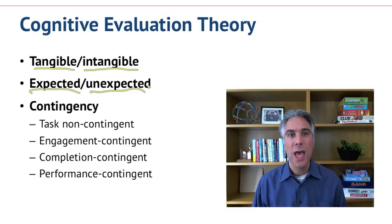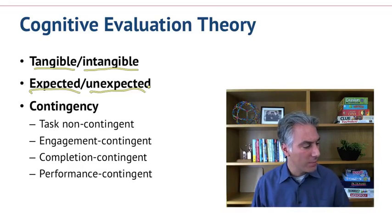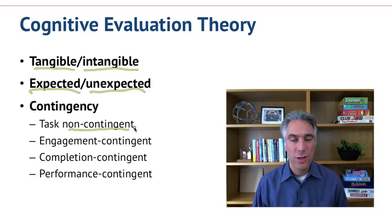Third set of distinctions has to do with what the rewards are contingent on. What is it that the player or other participant has to do to get the reward? The first subcategory is if the reward is non-contingent. You get the reward no matter what. You don't have to do anything. That's the reward not being contingent upon a task. Not something that we see too commonly because then what's the point if you get the reward automatically.